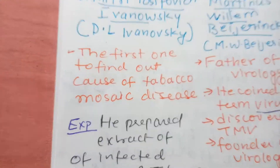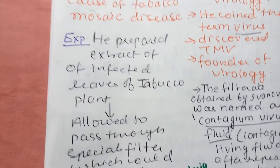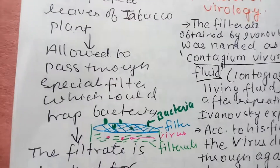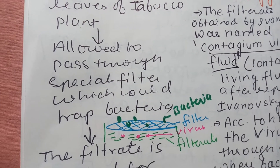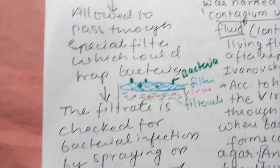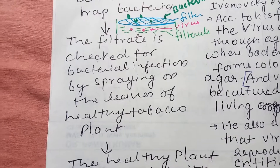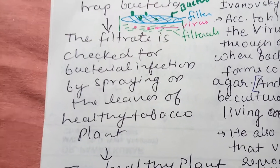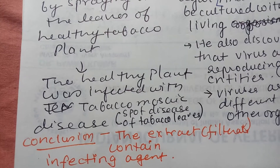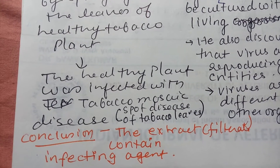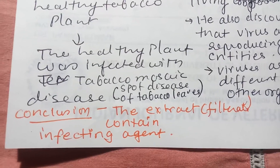Ivanovsky did an experiment where he prepared the extract of an infected tobacco leaf and allowed it to pass through a special filter that could trap bacteria. Bacteria could not pass through, but the virus could, so the filtrate contained virus. The filtrate was then checked for bacterial infection by spraying it on leaves of healthy tobacco plants. The healthy plant was infected with tobacco mosaic disease, the spot disease of tobacco leaves. He concluded that the extract or filtrate contained an infecting agent.